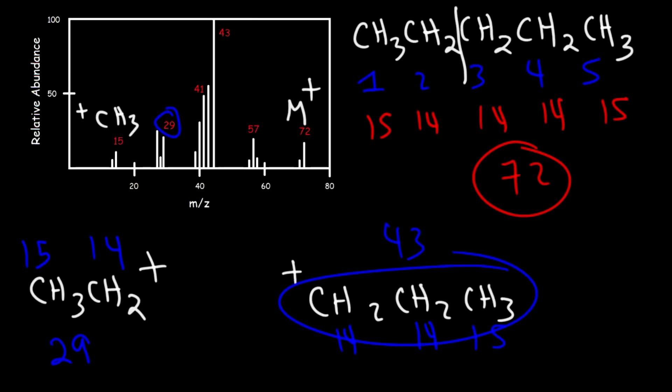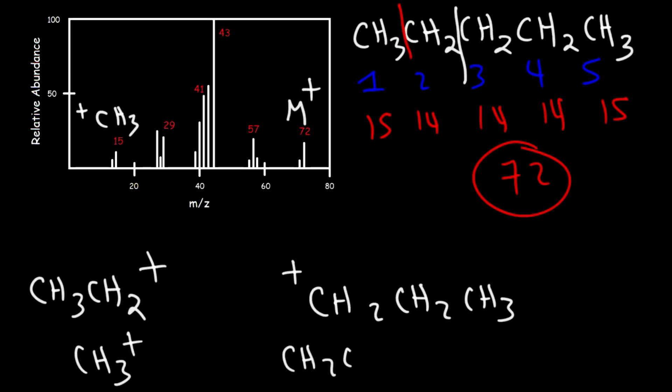Here's a question for you: why is the propyl cation the base peak and not the butyl cation? Let's compare both of them side by side. If we break the C1-C2 bond, we could get a methyl cation and we could get a primary butyl cation. Which situation leads to the formation of more stable fragments?